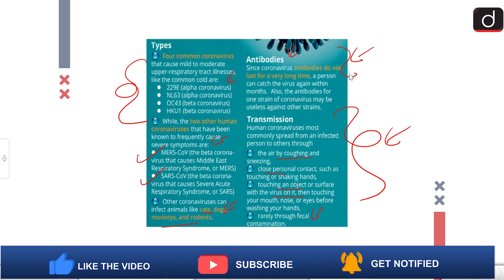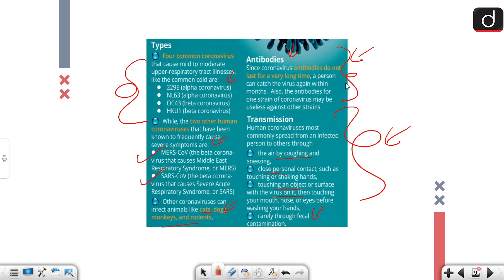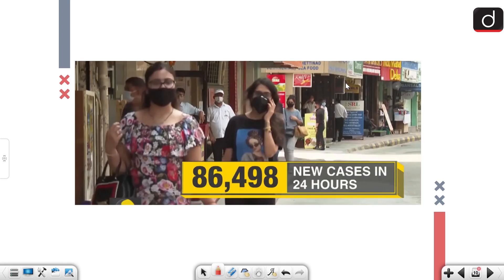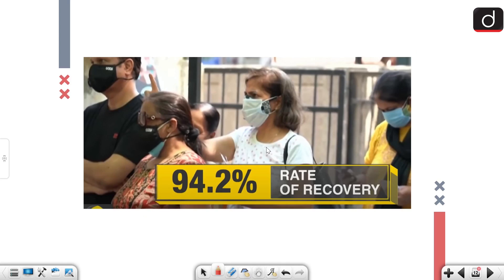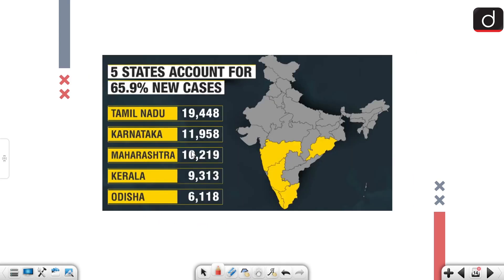A lot of research is ongoing on antibodies, so we do not have a very concrete opinion yet. If we talk about new cases in the last 24 hours, this was yesterday's data - the lowest in 60+ days at 86,498. The death rate has also come down and rate of recovery is better. The five states which account for 65.9% of new cases are Tamil Nadu, Karnataka, Maharashtra, Kerala, and Odisha.